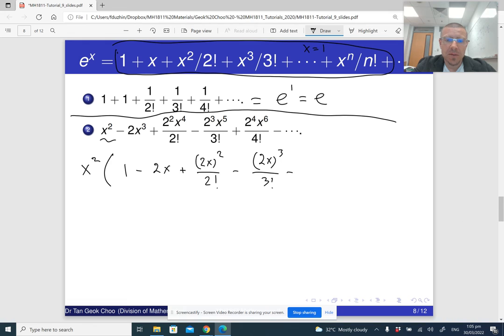This is plus two x to the four over four factorial minus and so on. So the signs are alternating. But then,